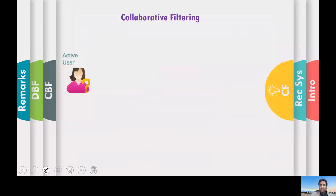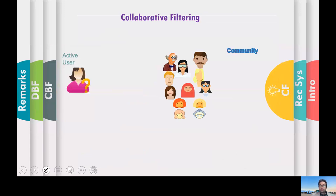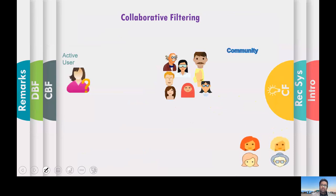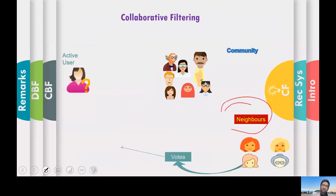Let's go to the first type: collaborative filtering. In collaborative filtering, you have some active user — the user you want to recommend something to — and you have a group or community of users which can be very diverse, with different ages, genders, and demographics.